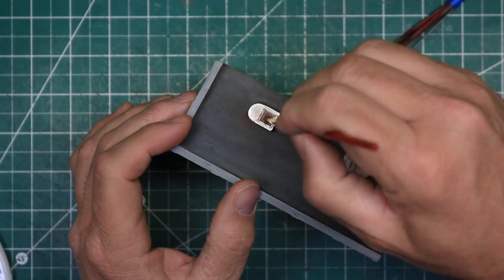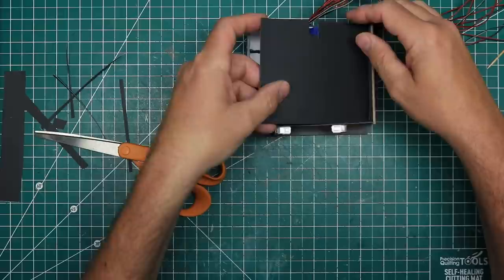To close things up, I cut a piece of black poster board and friction fit it in the back. And with this, the structure was ready to install on the layout.